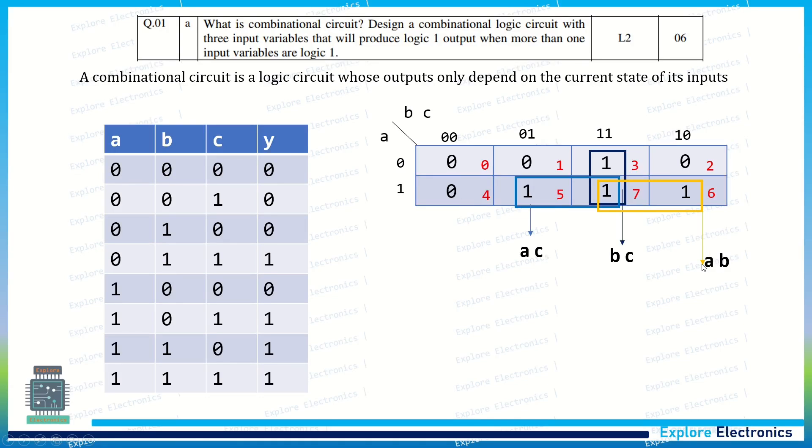So now we need to write the final expression and the implementation. Expression will be y equals AC plus BC plus AB. And we can use AND gates and OR gate to implement this. AC together gives AC over here at the output of the first AND gate. This second gate gives BC, third gate gives AB. So take all these three into an OR gate. This gives the final expression.